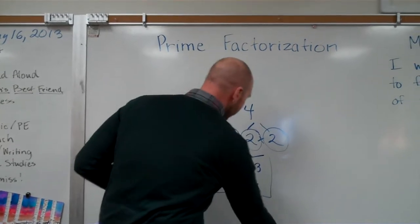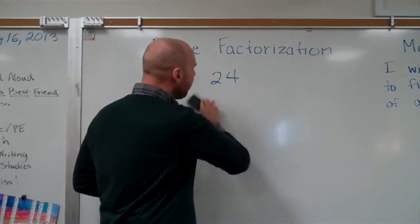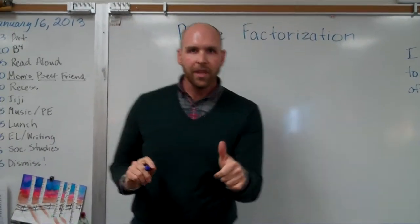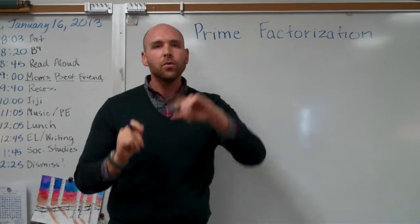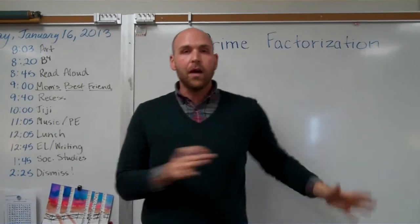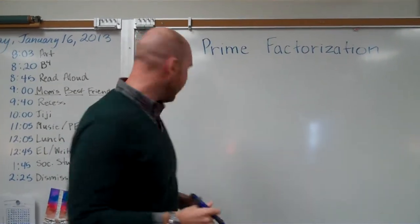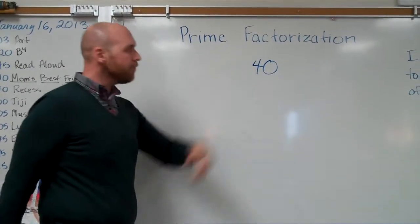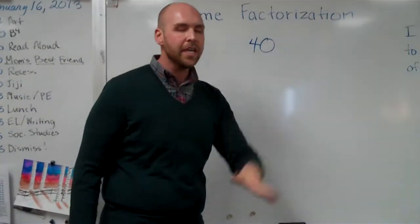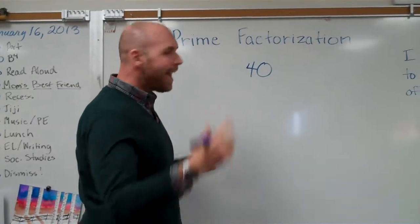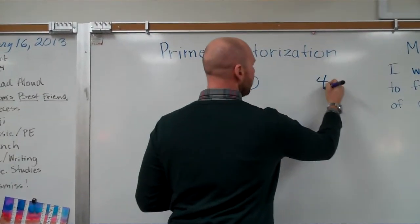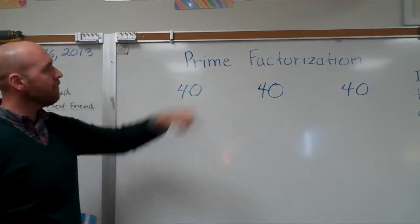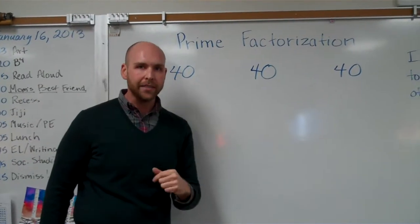So let's do another one. Now the cool thing about prime factorization is that it will work with any number and there's more than one way to get it right. I love that when there's more than one way to get the right answer. So let's take the number 40. Alright. Now think of the different factor pairs of 40. The different ways to make 40. I can think of 3.